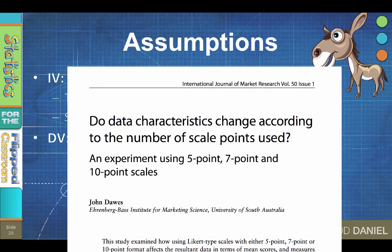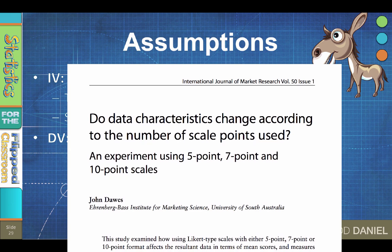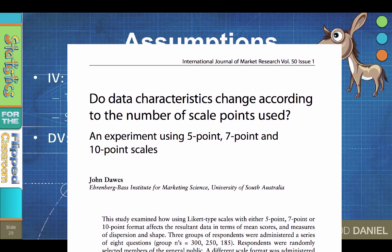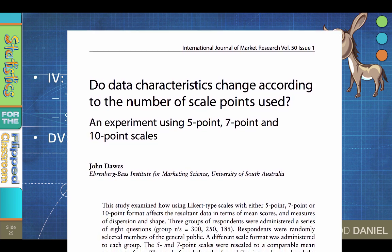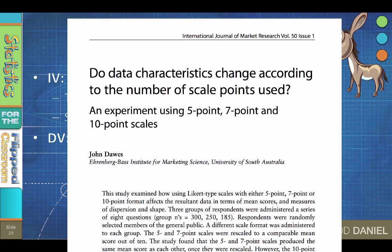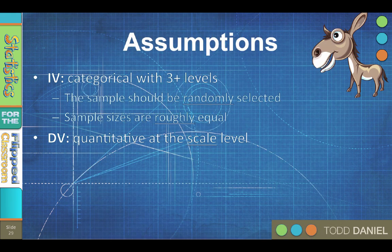In fact, John Dawes, 2008, demonstrated that when Likert survey scales have five or more item options, they function like scale data and they can be used with parametric statistics like this one-way ANOVA.